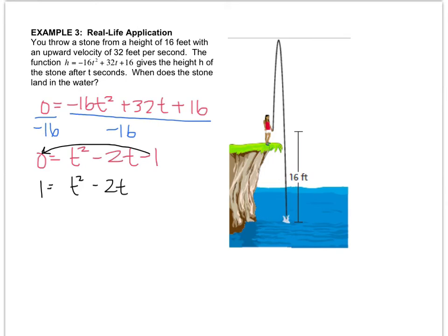So now I take half of the b term. Half of negative 2 is negative 1. And then negative 1 squared is 1. So what I've got is 1 plus 1 equals t squared minus 2t. And then there's my plus 1 again. So I'm adding this, but I have to add it to both sides because then it maintains the equality. This expression right here is t minus 1 squared. And that equals 2 because I had to add 1 on the other side as well.